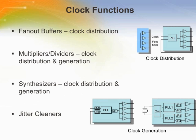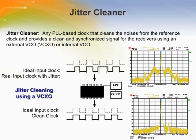There are two main functions that a clocking device can perform: either signal distribution or generation. Fan-out buffers are solely used for distribution, while multipliers, dividers, and synthesizers are used for distribution and generation. A jitter cleaner can be any of the clocking devices listed. One type of clock commonly found in highly sensitive electronic systems is known as a jitter cleaner. Jitter is a term used to represent the various types of noise associated with a clock signal. A jitter cleaner is any PLL-based clocking device that removes this noise from the reference signal and provides a clean and synchronous output signal. Jitter is usually removed from the reference clock by setting the loop of the PLL to a low bandwidth.